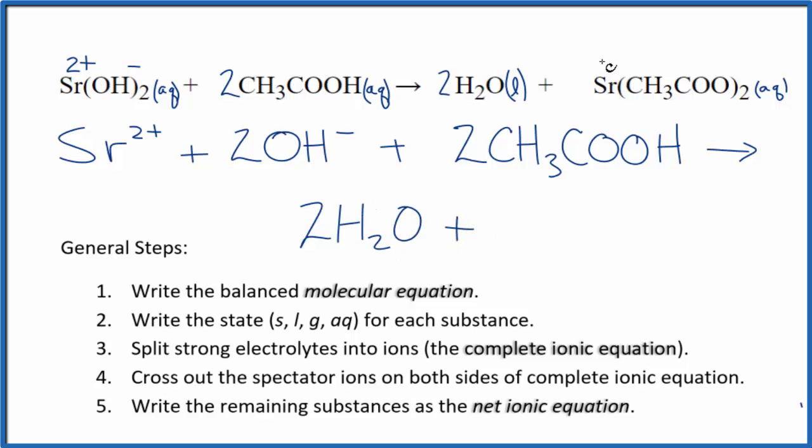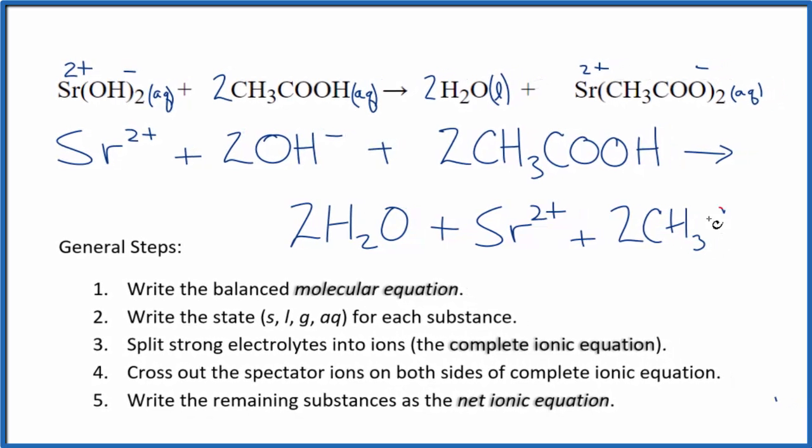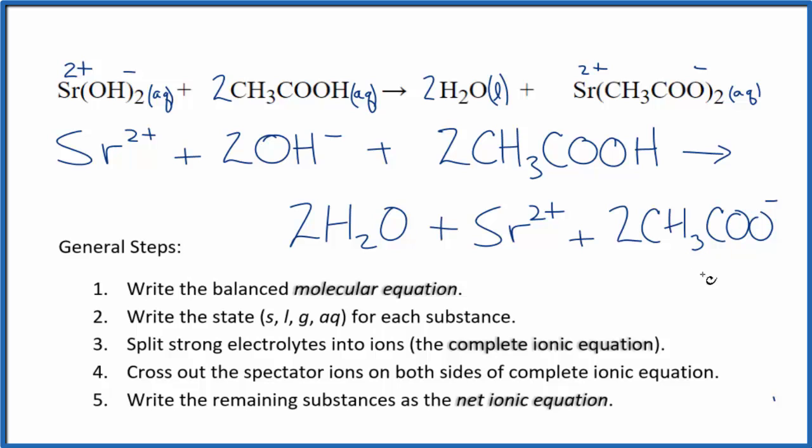And then the acetate, we said 2 plus. The acetate ion here is 1 minus. So we have our strontium ion, Sr 2+. And then we have two of these acetate ions. 2CH3COO-. So this is the complete ionic equation.